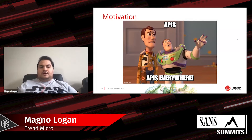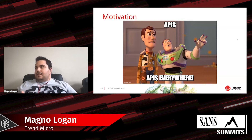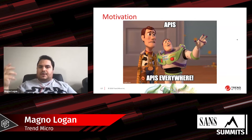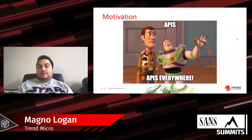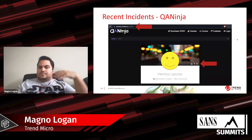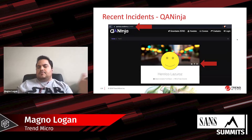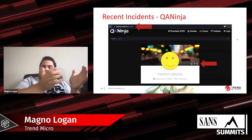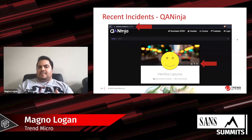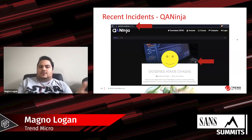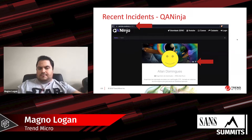APIs are basically everywhere now, and the chances of you encountering a web application during pen testing or a bug bounty that has an API in the back end are very high. Earlier this year I found and reported a vulnerability in an application — it was kind of a basic one, a training platform for testing and QA. By simply changing the user IDs without being logged in, I was able to get user information. I reported it and they fixed it.